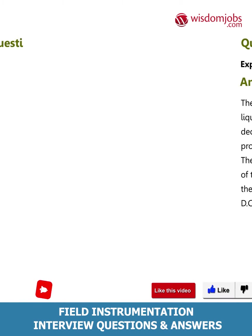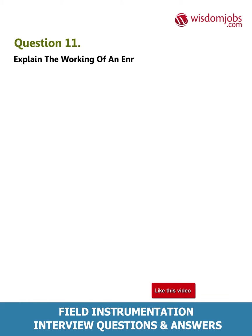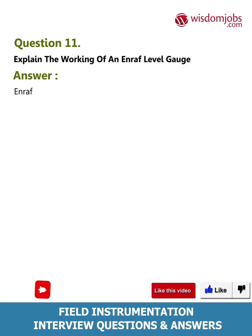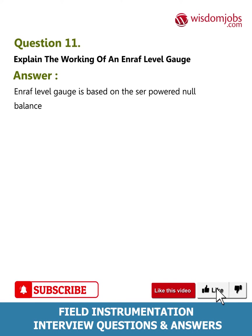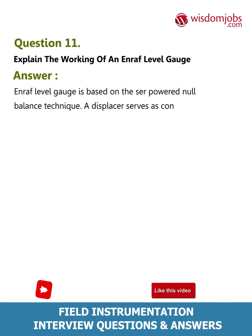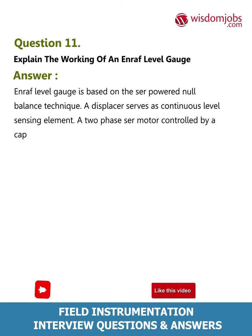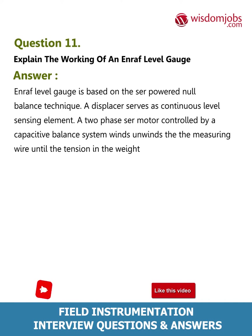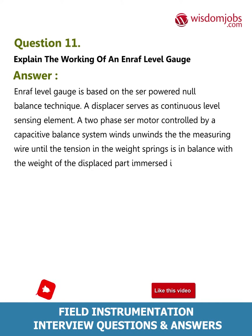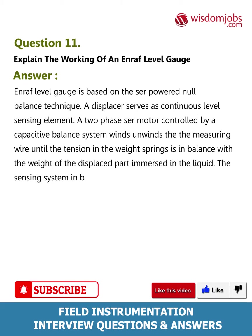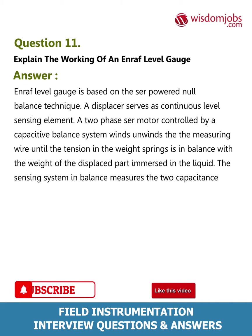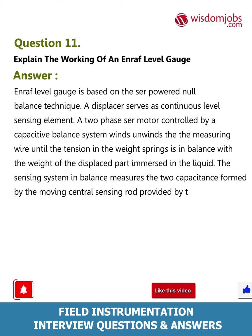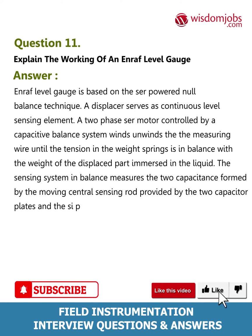Question 11: Explain the working of an Enraf level gauge. Answer: The Enraf level gauge is based on the servo-powered null balance technique. A displacer serves as a continuous level sensing element. A two-phase servo motor controlled by a capacitive balance system winds or unwinds the measuring wire until the tension in the weight springs is in balance with the weight of the displacer part immersed in the liquid. The sensing system measures the two capacitances formed by the moving central sensing rod provided by the two capacitor plates.